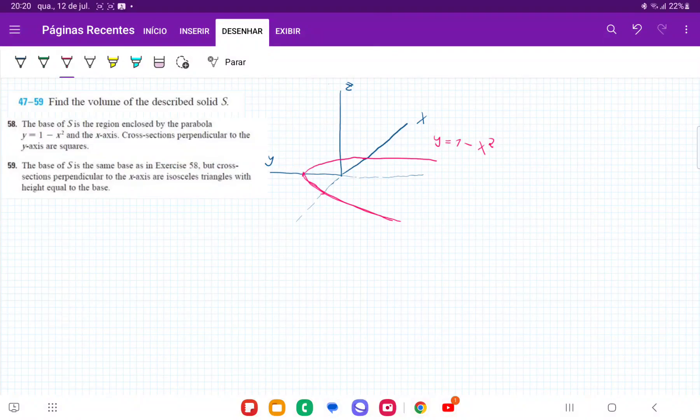So for number 58, we want to find the volume of a solid whose base follows this parabola, y is equal to 1 minus x squared, and then the cross-sections perpendicular to the y-axis are squares.